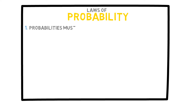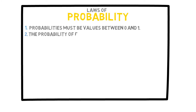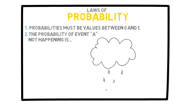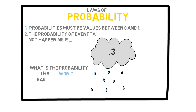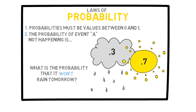So far, the only law that we have discussed is the one that states that probabilities must be values between 0 and 1. The first new rule that I want to talk about deals with the probability of event A not happening. For example, if I tell you that the probability of it raining tomorrow is 30% or 0.3, what is the probability that it won't rain tomorrow? Well, it would be easy to figure out that this probability would be 0.7. This demonstrates the rule that states that the probability of event A not happening is simply 1 minus the probability of event A. Now we have two rules so far: the one just mentioned and the fact that probabilities must be between 0 and 1.